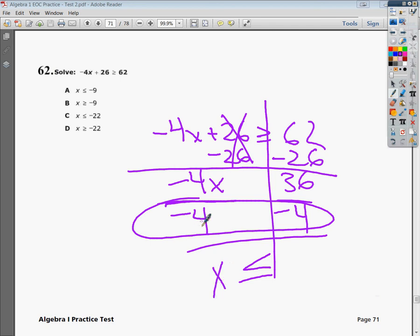Because this is negative. If you're adding or subtracting in the last step, you don't flip it over. It's only if you're multiplying or dividing by a negative in that last step. So 36 divided by negative 4 is negative 9.